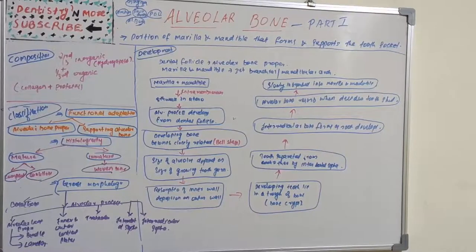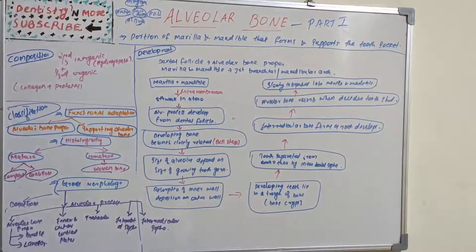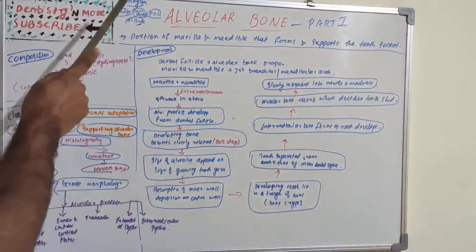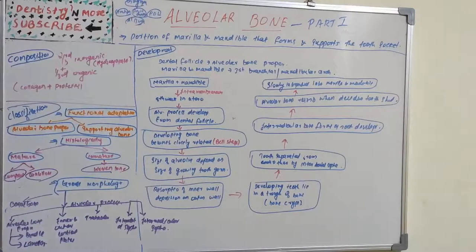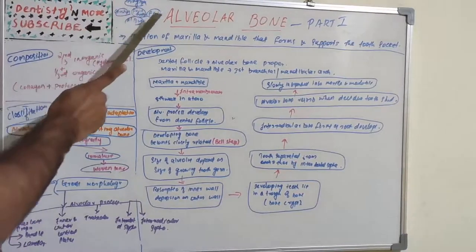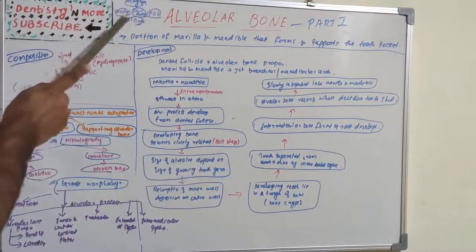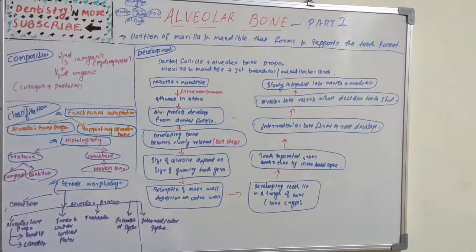Welcome back to another session on dentistry. Today's topic is alveolar bone, which is one of the components of the periodontium. The periodontium consists of two soft tissues and two hard tissues: gingiva and periodontal ligament are the soft tissues, whereas cementum and alveolar bone are the hard tissues. We've finished gingiva, periodontal ligament, and cementum — now we're moving on to alveolar bone.